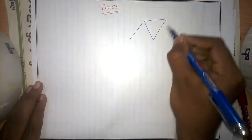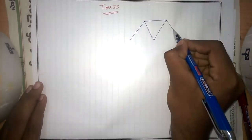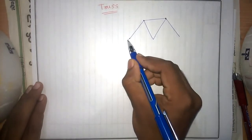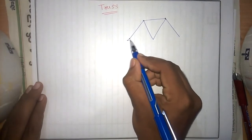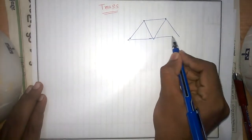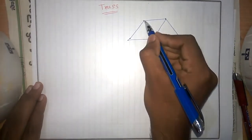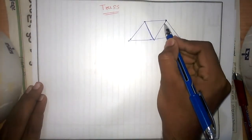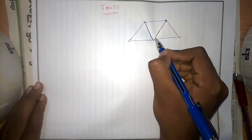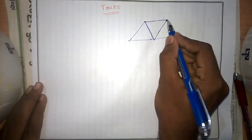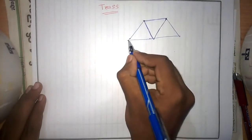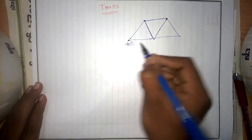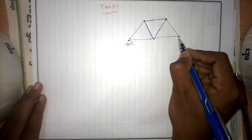In the truss, all the members form triangular members. A truss is simply a combination of only triangular members. They are supported by either roller supports or fixed supports.